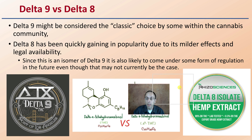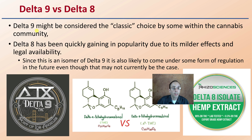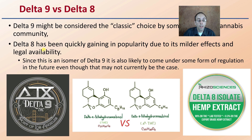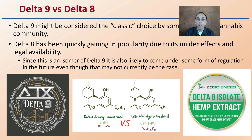In a final comparison, Delta-9 might be considered the classic choice by some within the cannabis community, while Delta-8 is quickly gaining popularity due to its milder effects and legal availability. Since Delta-8 is an isomer of Delta-9, it's also likely to come under some form of regulation in the future. That simple flip of the double bond doesn't look like it changes much, but it affects both the effects and how current laws classify the compound. Hopefully this provides a better educational background on the difference between Delta-9 THC and Delta-8 THC.